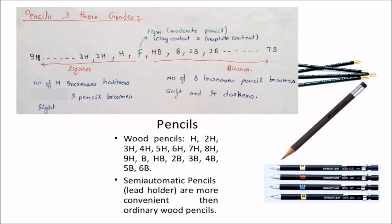As the number of H increases on the left hand side, the pencil becomes harder and lighter. As on the right hand side, number of B increases, pencil becomes soft and it darkens. The darker lines are used to indicate the firm objects which are actually existing and whereas the lighter ones are for the center lines, dimensions, detailing.